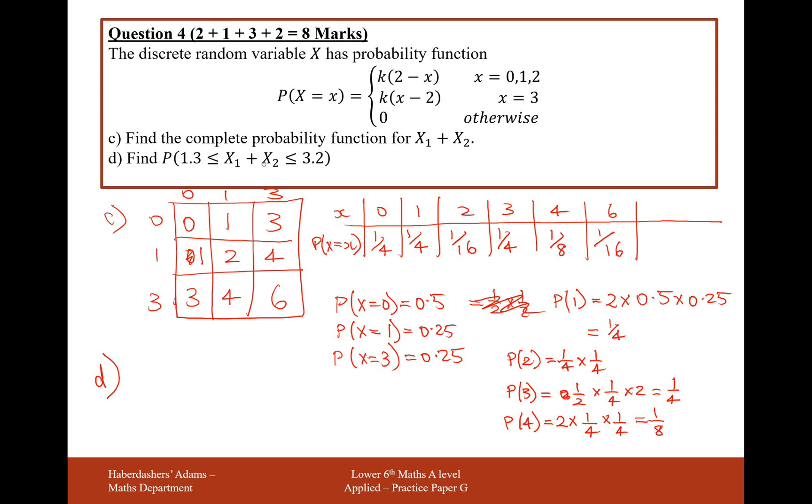Find the probability that your summation between your two observations here is going to be between 1.3 up to 3.2. I can only think of a couple of ways this will happen. Either they score a 2, or they score a 3. So the probability of being between 1.3 to 3.2 is equal to 1 16th add 1 quarter, which is 5 16ths.